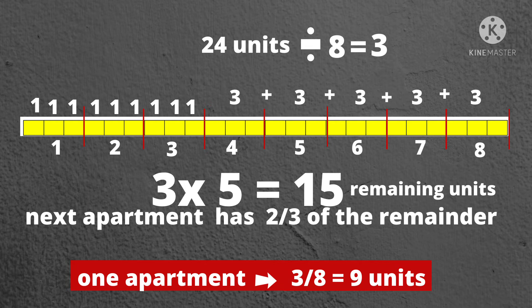Since there are 5 threes, let's multiply 3 by 5 and the result is 15 as the remaining units. But we are not yet done. 15 is the remaining units or the remaining number of newspapers. We have to look for the two-thirds of the remaining number of newspapers to be delivered on the next apartment.